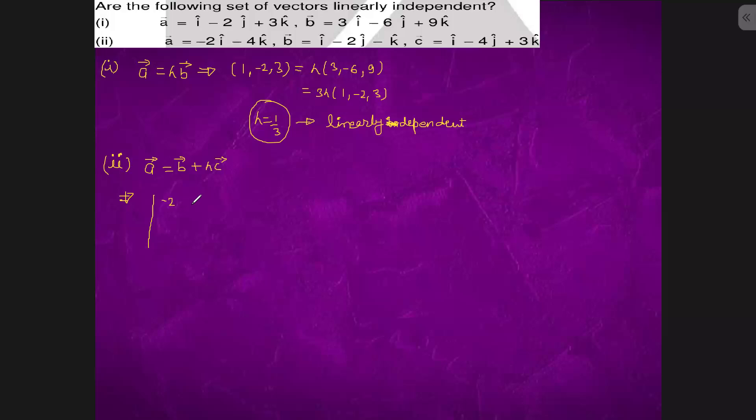This is 1, -2, -1 which is 1, -4, 3. This is -2. We use A cross B dot C to check if they are not zero, then they will be linearly independent, otherwise they will be coplanar.